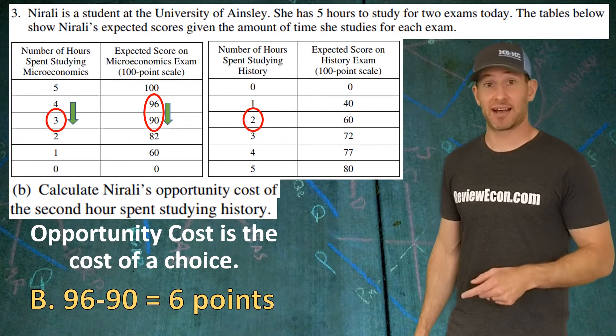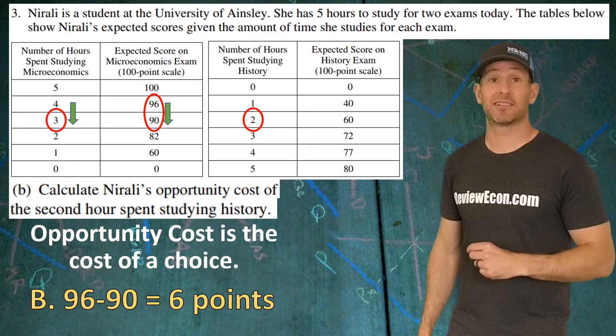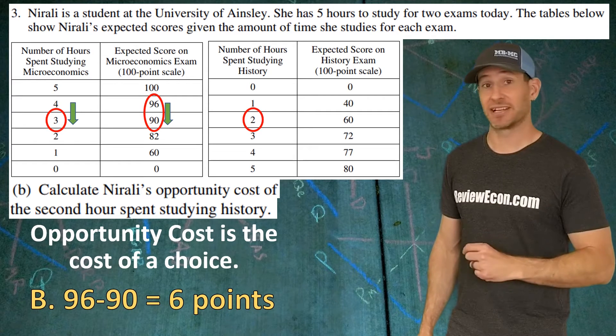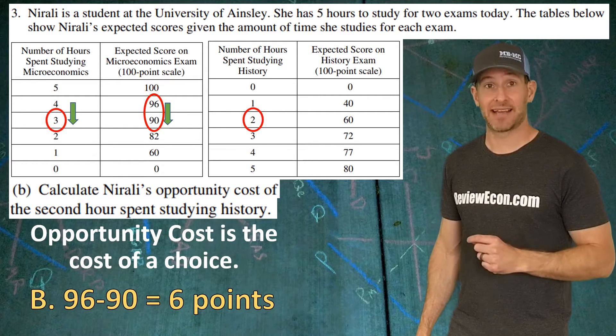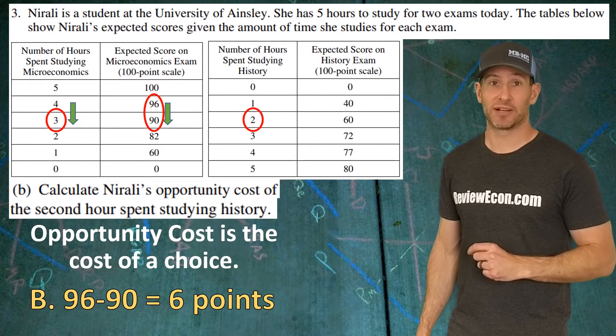That gives us six points — that's the opportunity cost of the second hour of studying history. Get that down and you've got this point.